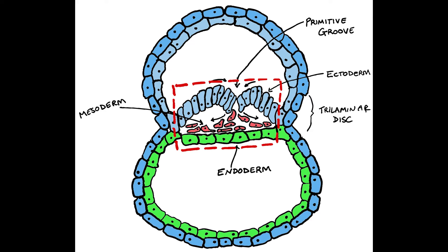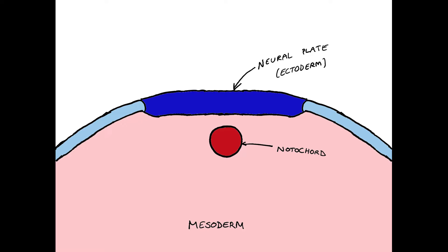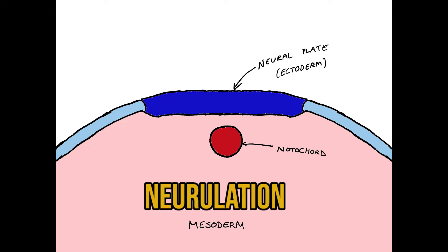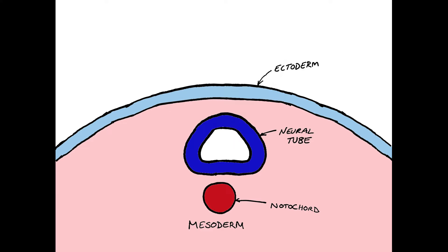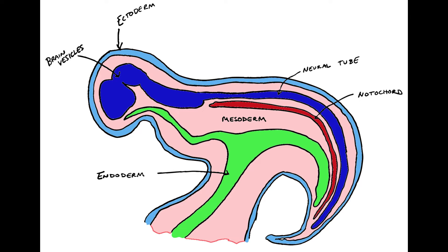Once these three layers are established, our first biologic origami fold takes place in a process called neurulation. A portion of the dorsal surface ectoderm called the neural plate invaginates — that means it folds downwards and inwards to form a little pocket. The pocket closes to form an enclosed tube within the mesoderm. This is the neural tube, and it will become everything in the nervous system. At the front end the neural tube begins to swell — the first sign of the brain developing — and this is where the eye will begin to develop.